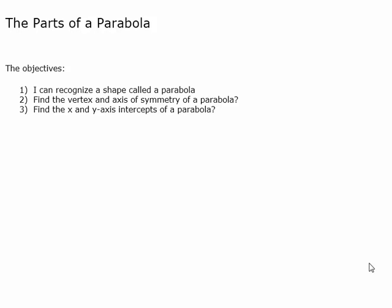In this video we're going to be looking at the parts of a parabola. The objectives are: by the end of this video you should be able to recognize a shape called a parabola, find something called the vertex and axis of symmetry, and find the x and y axis intercepts of a parabola. Those are three objectives for this video.